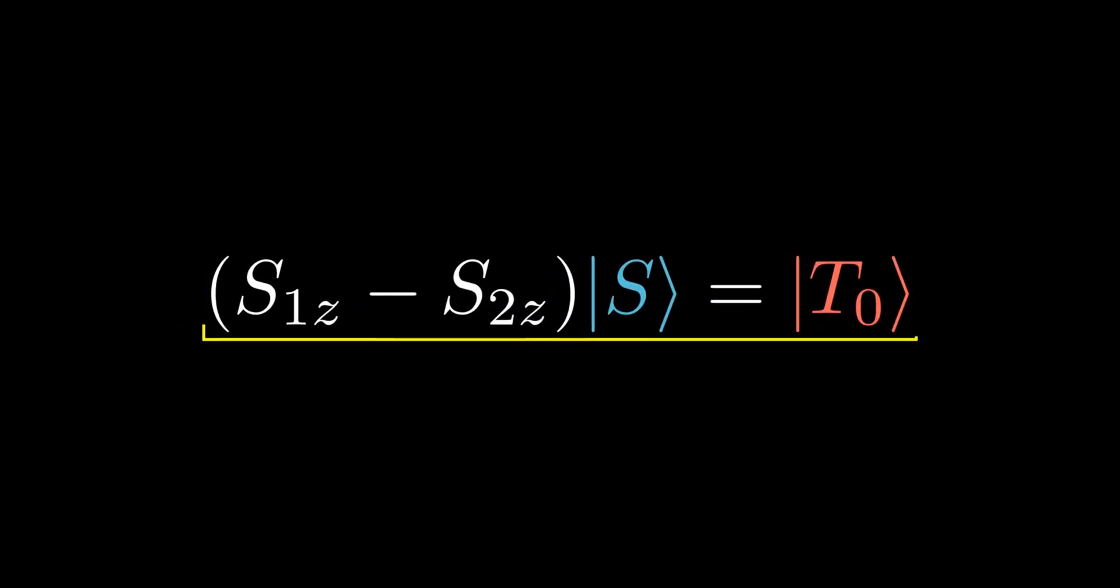Then we simplify and recognize this as the triplet state T0. Thus, we have demonstrated that spin-orbit coupling can convert the singlet state into the triplet state T0.